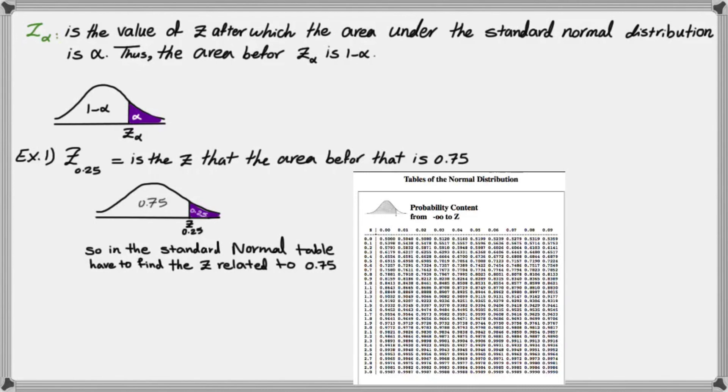That means in the standard normal table, I have to find the Z associated to 0.75. Remember, your standard normal table gives you area inside, in this area, and then it gives you the value in here. So now, this time, I'm not looking for probability. I already have the probability. It means that I have some value in this area. And I want to find the Z associated to that.